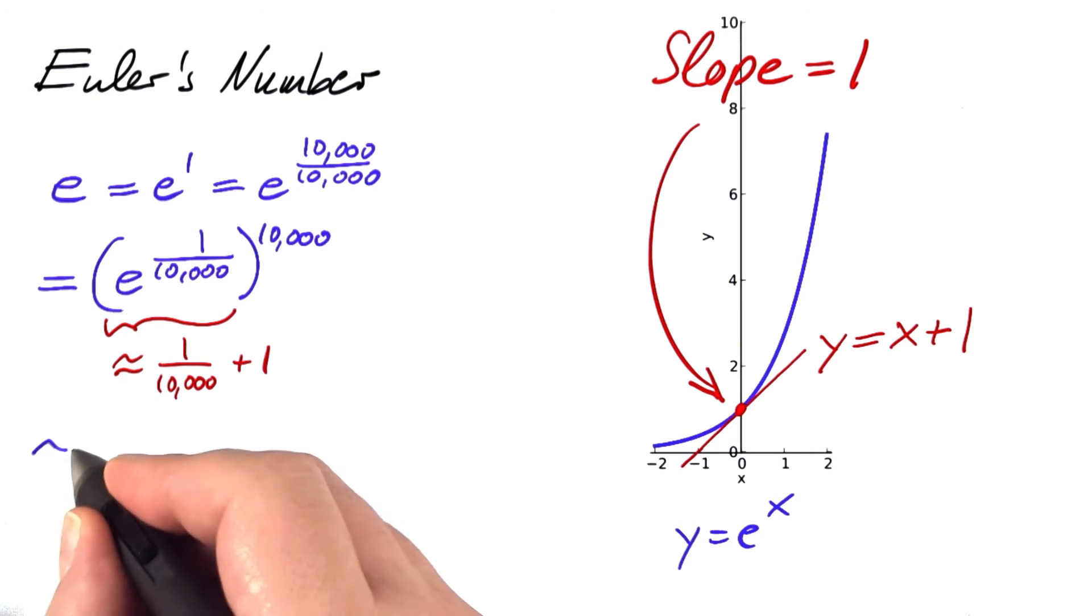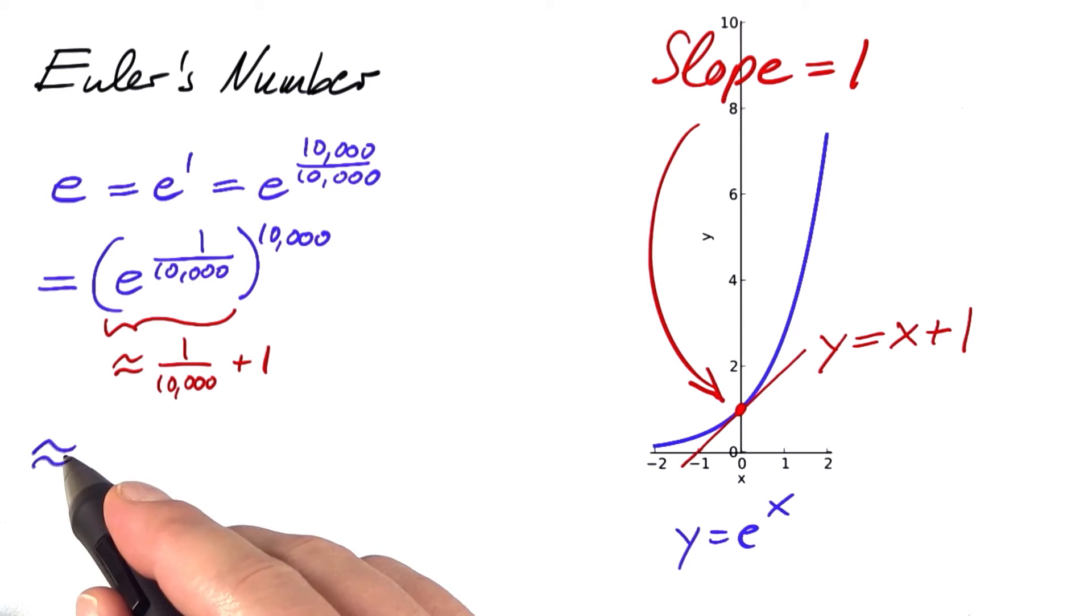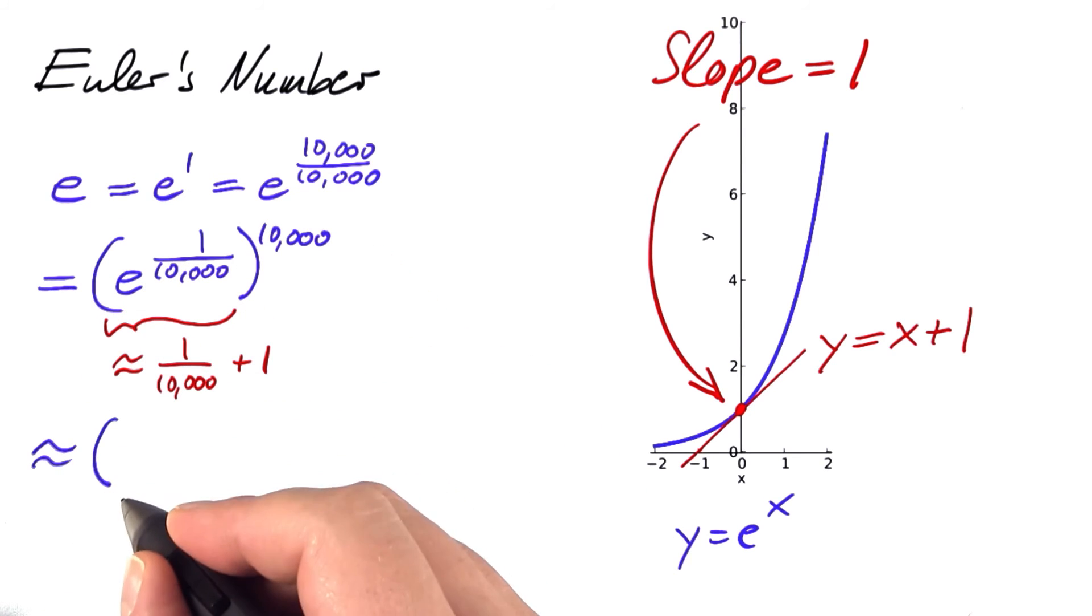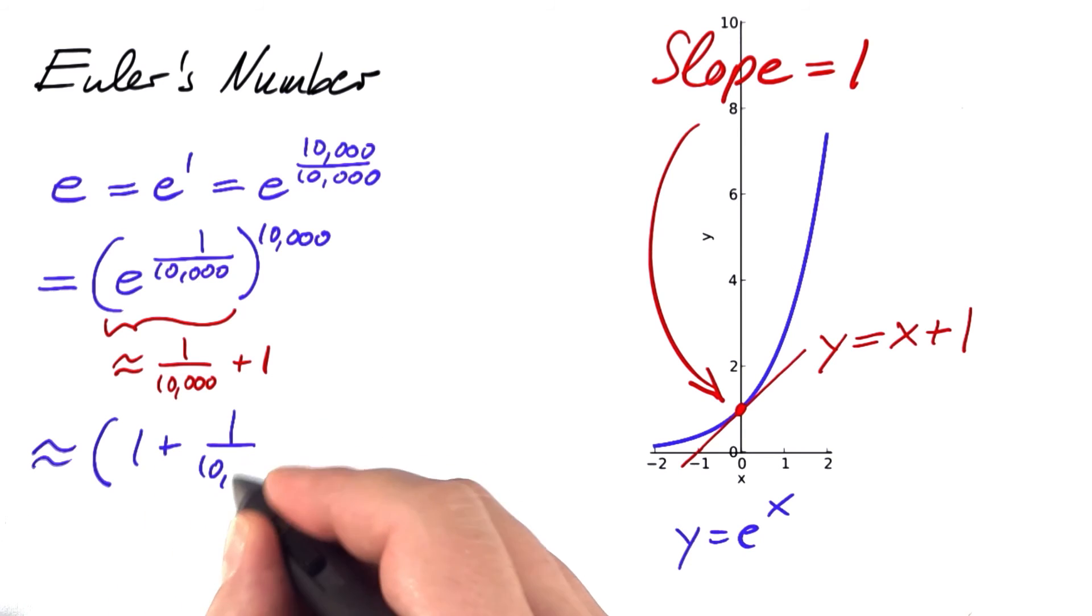Let me plug that in. Then we have e is approximately equal to, I changed the order here to make it look nicer, 1 plus 1 over 10,000 to the power of 10,000.